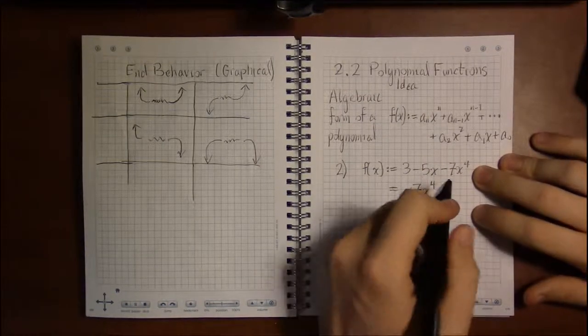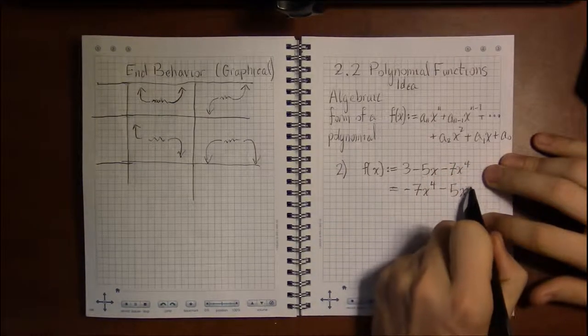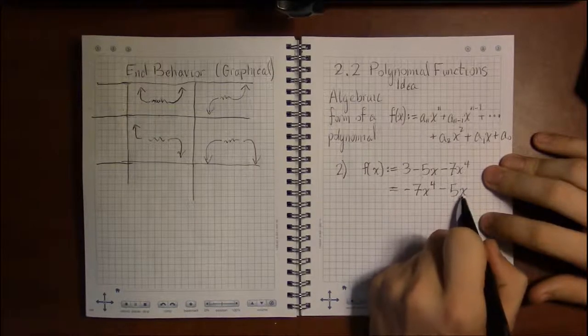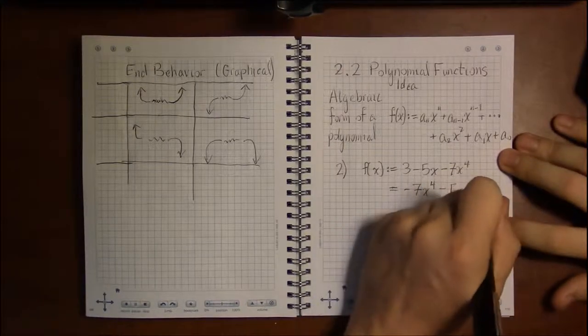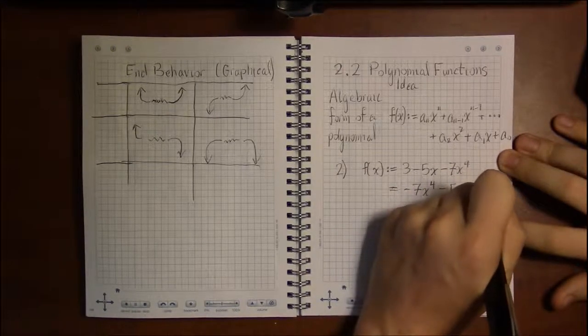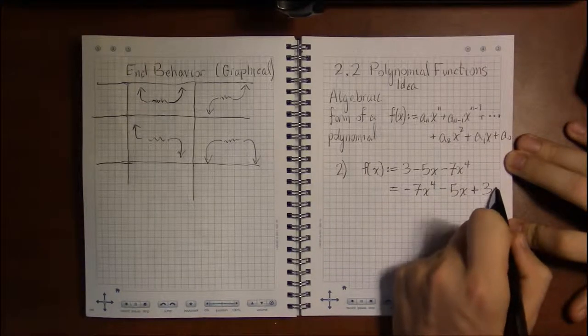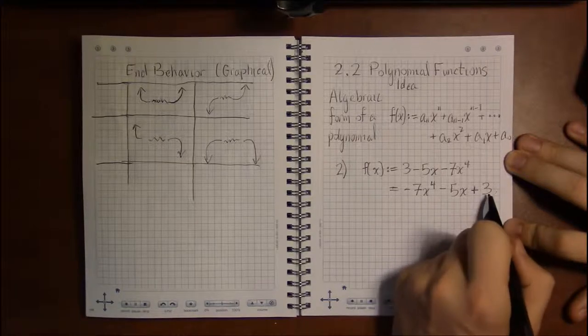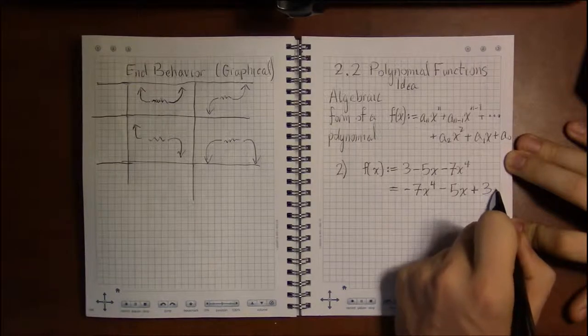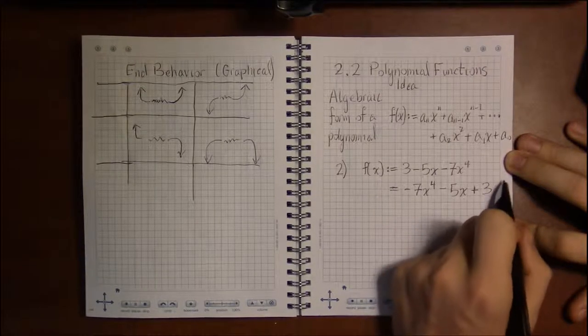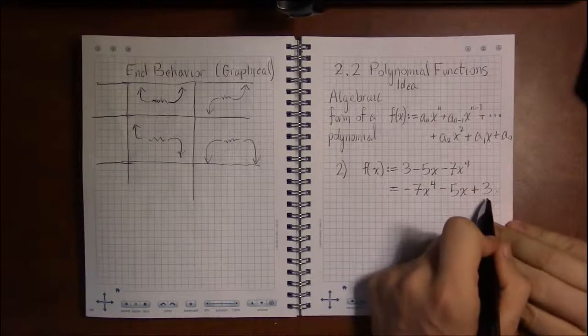And then 3. If you wish, the power of x here is x to the zero, because x⁰ is just 1, and 1 times anything is just itself. Again, it just makes no sense to write x⁰ when it's going to have no effect on the 3. So this is the standard form.